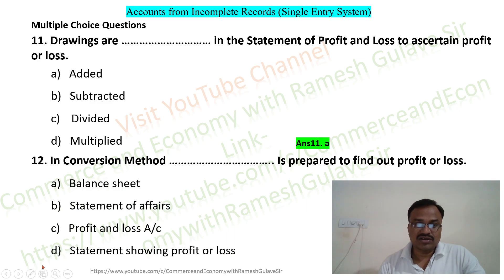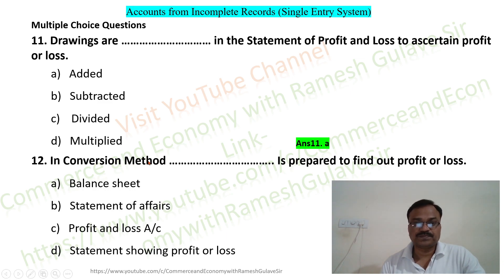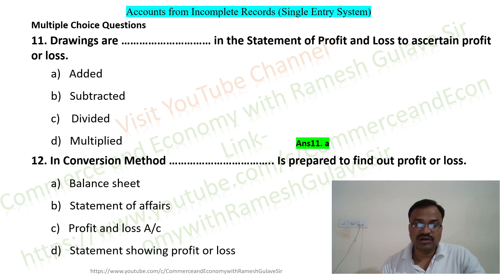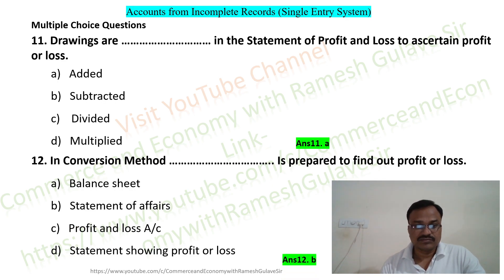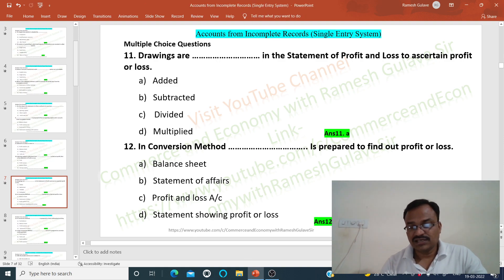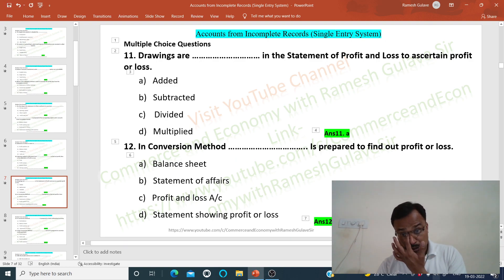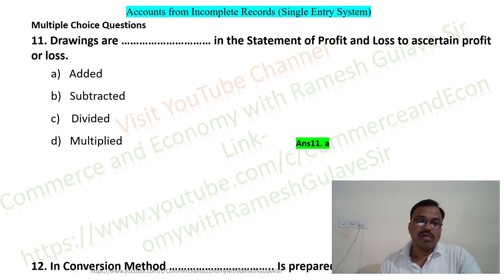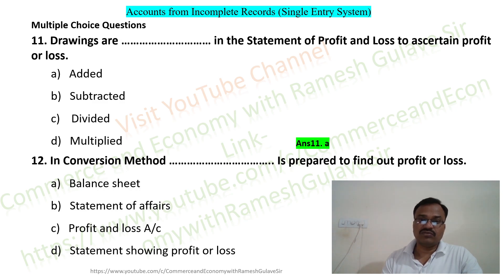The next part asks: in conversion method, dash is prepared to find out profit or loss. Options are balance sheet, statement of profit, profit and loss account, statement showing profit or loss. In the conversion method, we convert single entry or incomplete accounts into complete accounts, and the profit is ascertained by preparing the profit and loss account. So option C is the right answer.